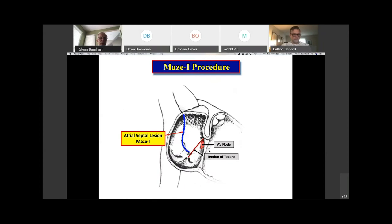And so in the evolution of the maze procedure, this is a diagram of the maze one procedure. And specifically, this is looking at the atrial septal lesion that was placed there by Jimmy Cox during the maze one procedure. And you can see that the septal lesion was well outside of the region of the AV node if placed in the proper location. So it really wasn't possible to cause heart block if performed properly.